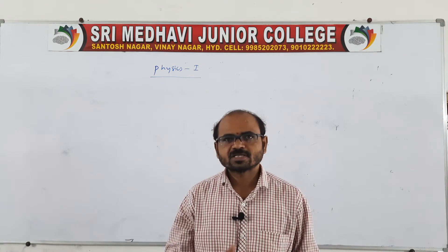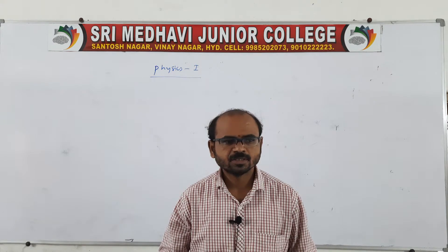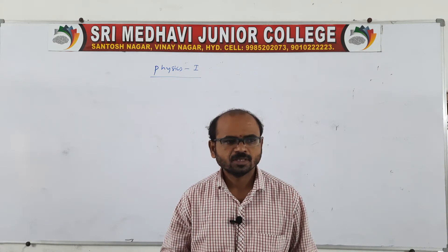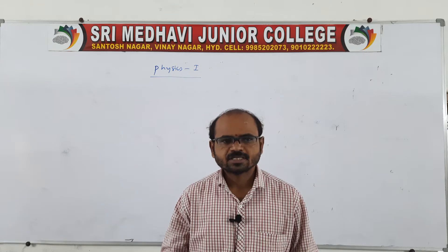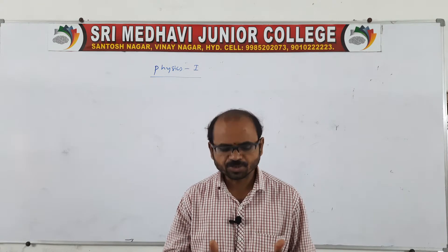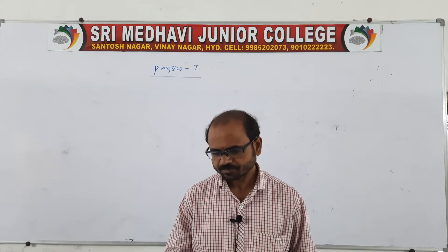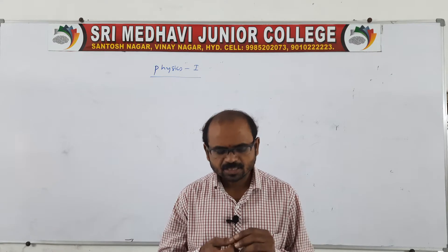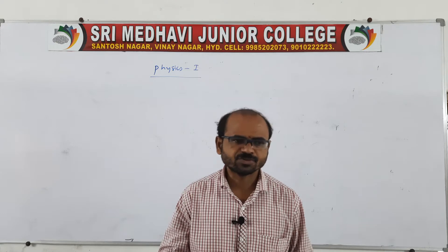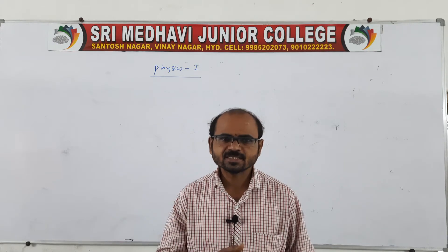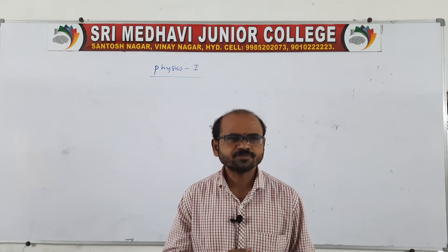Very good morning students. In the previous class we finished about unit vectors and orthogonal vectors. A unit vector is a vector whose magnitude is equal to 1. The formula is: a-cap equals a-vector divided by the magnitude of the vector.